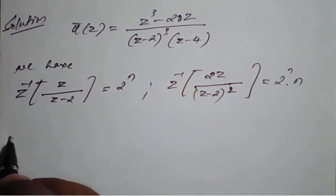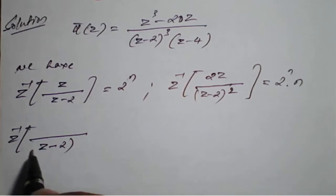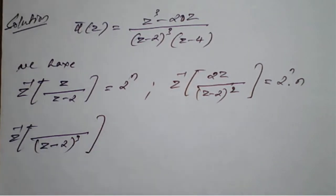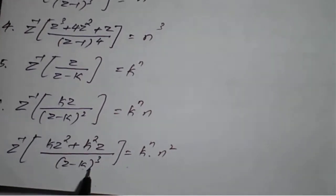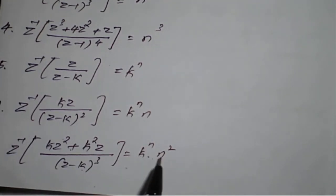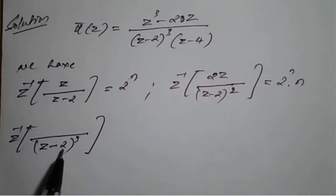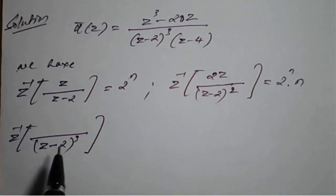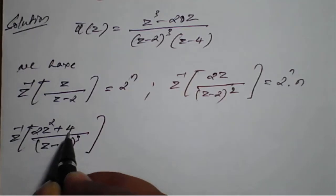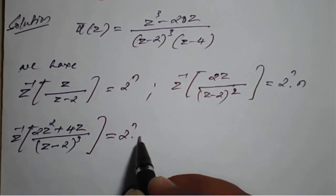Z-inverse of 1/(Z-2)³: for (Z-K)³ the numerator is KZ² + K²Z, and the resultant is Kⁿ · n². Here K=2, so numerator is 2Z² + 4Z, and the result is 2ⁿ · n².